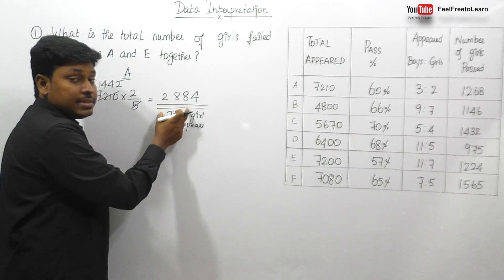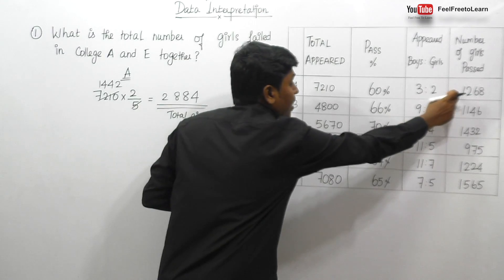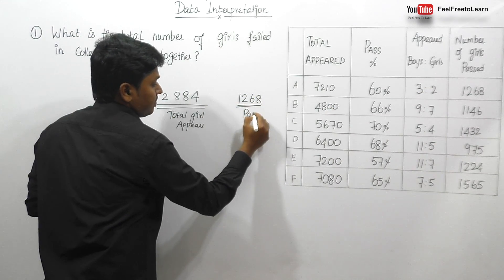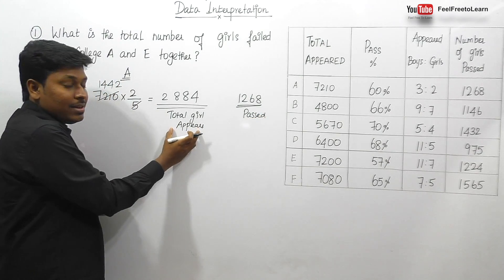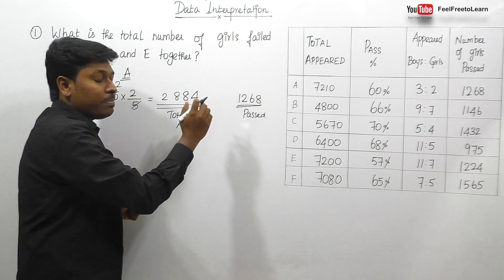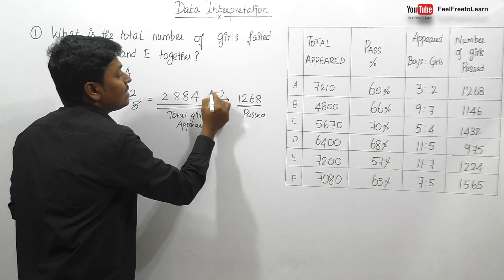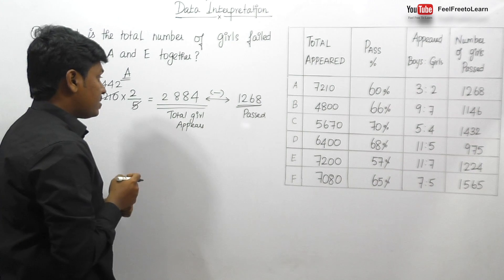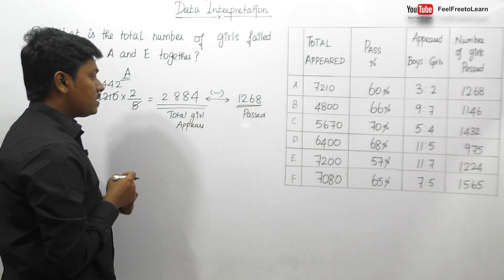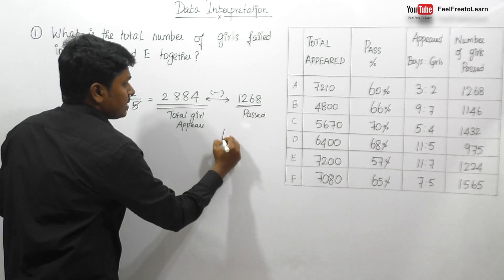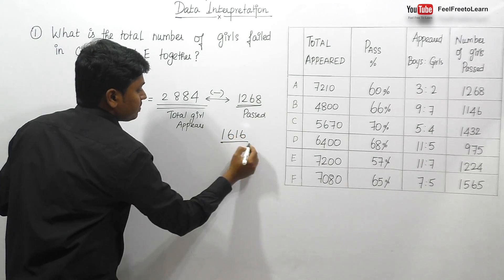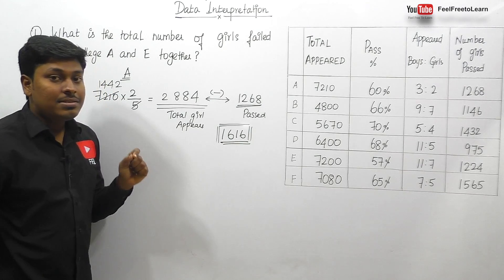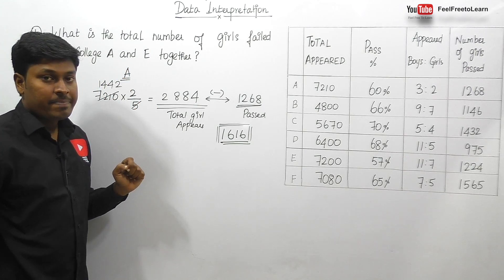Our target is to find the girls who failed. Total girls appeared is 2884, and from the last column we know that 1268 is the total girls who passed. If I subtract both values, I can get how many girls failed in college A. So 2884 minus 1268 equals 1616. So 1616 is the total number of girls who failed in college A.